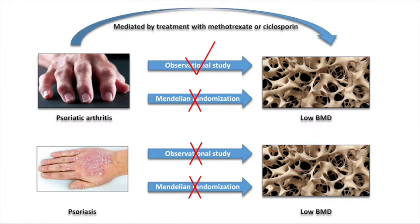Afterwards, we performed a mediation analysis and found that the effect of psoriatic arthritis on low BMD was mediated by treatment with methotrexate or cyclosporine. Therefore, it is not causal. All these results complement each other well.